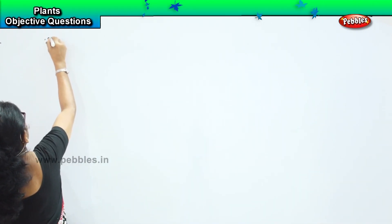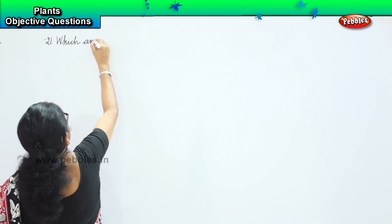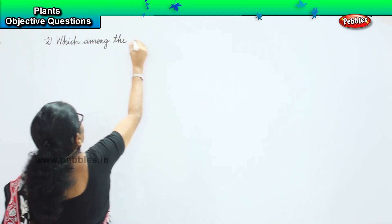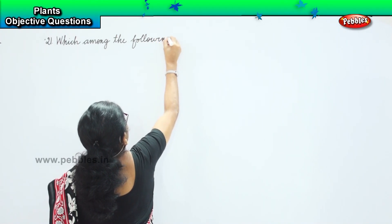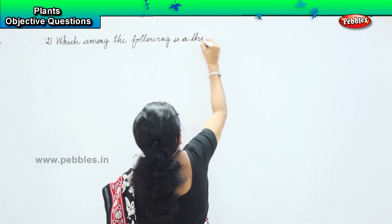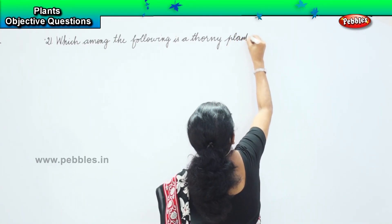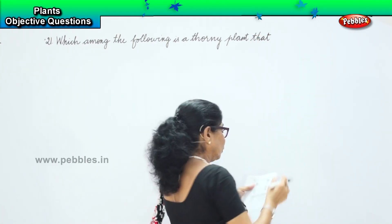Let us go on to the twenty-first question. Which among the following is a thorny plant that provides perfume? The four options — which of them provides perfume? Twenty-first question: which among the following is a thorny plant that provides us perfume?